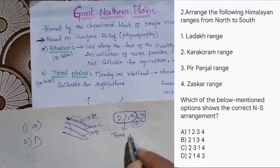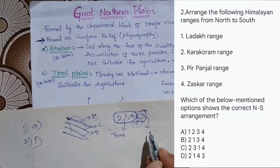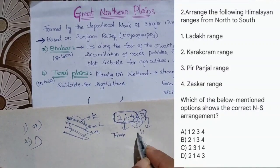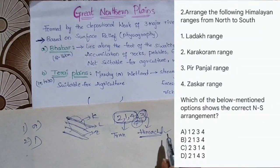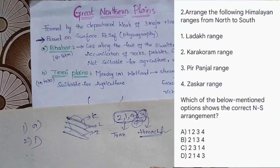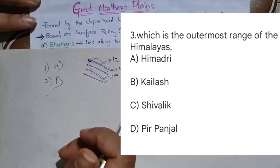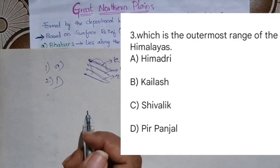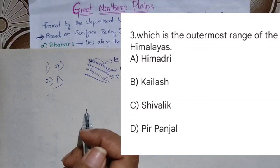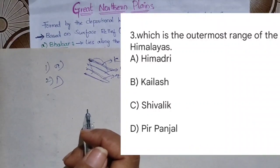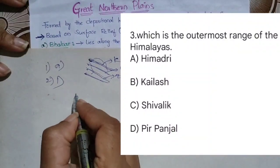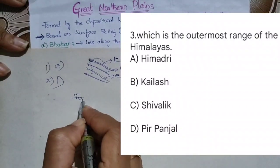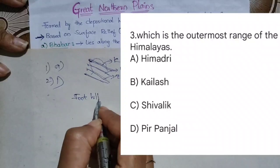Karakoram, Ladakh, and Zaskar — these three are part of the Trans-Himalayan zone, and Pirpanjal was a part of the Himalayan range, as we already discussed. The next question: which is the outermost range of Himalayas? The outermost range is the Shivaliks.